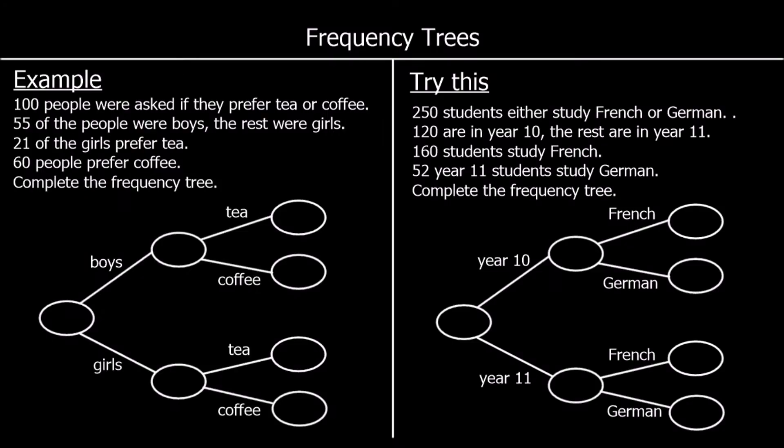A frequency tree is a way of displaying information that can be broken down into groups. In this example we're told 100 people were asked if they prefer tea or coffee. So the total number of people is 100, and we're starting with 100 people and then we're going to break it down.